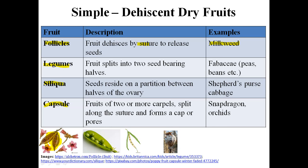Legumes are generally present in the family Leguminosae, whose new name is Fabaceae. Examples include peas and beans. In the Fabaceae family, the fruit splits into two seed-bearing halves. It should be noted that other kinds of fruits are also present in Leguminosae.